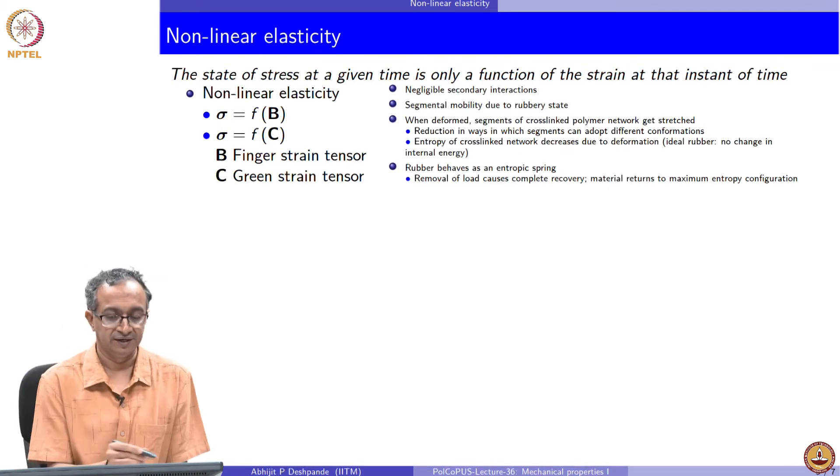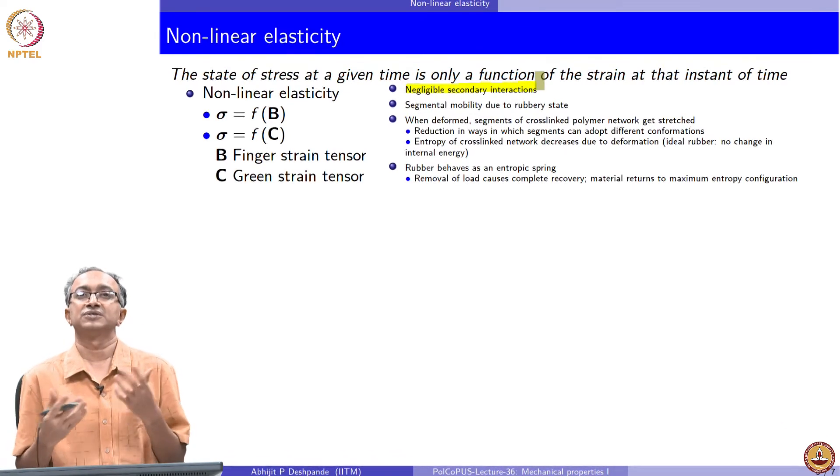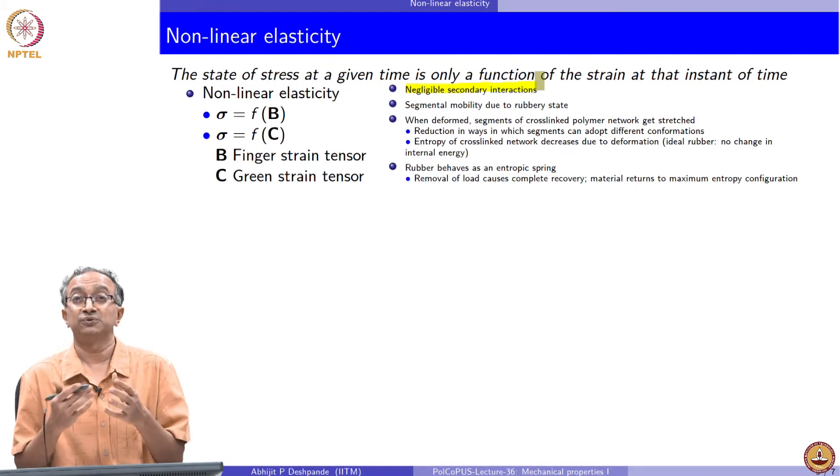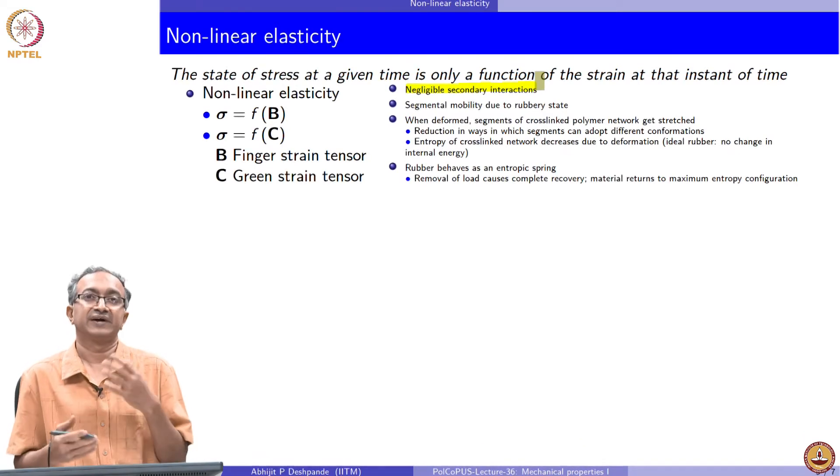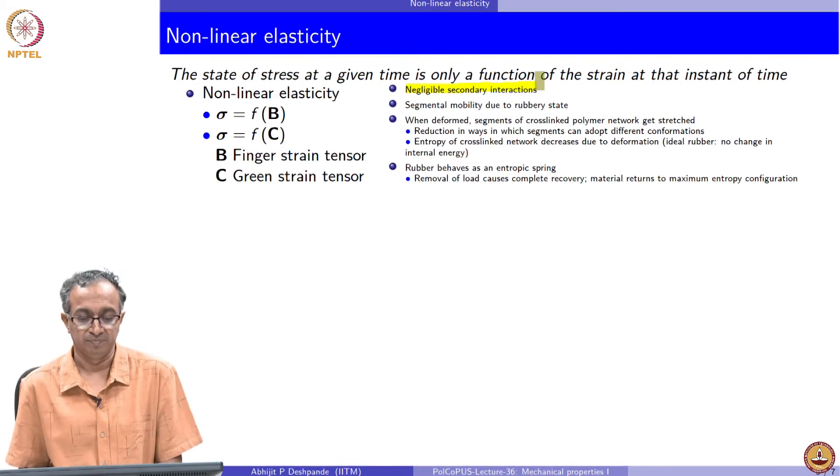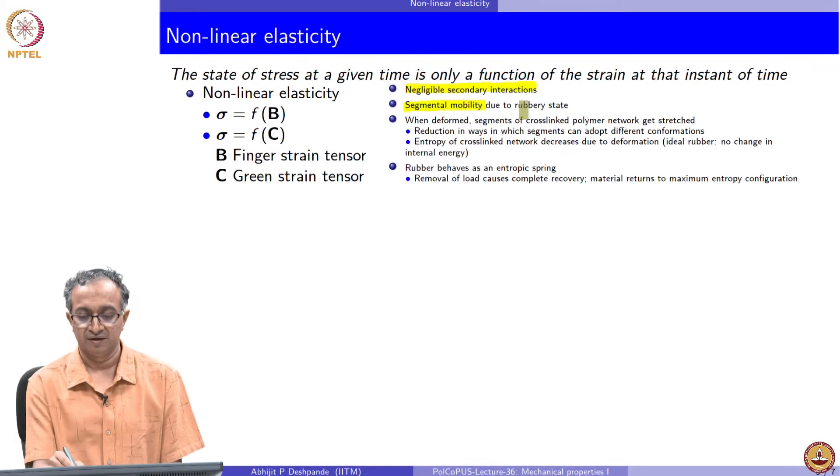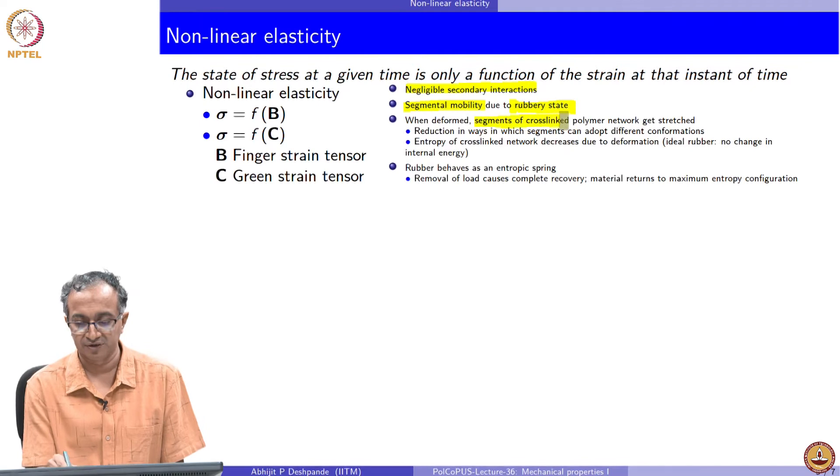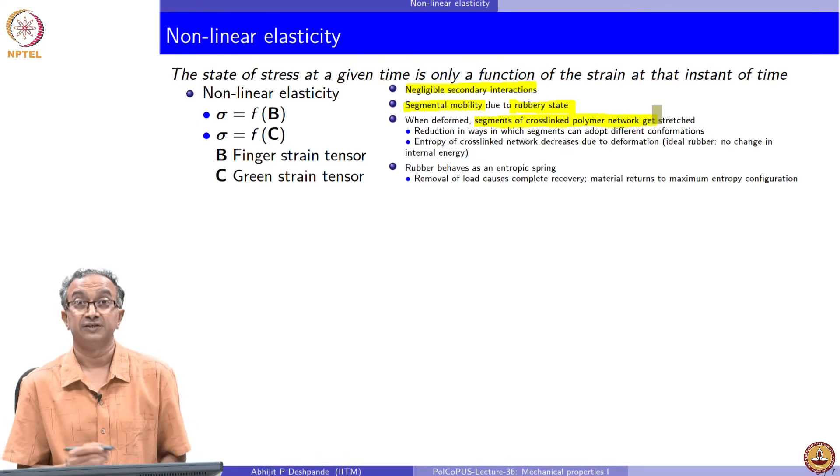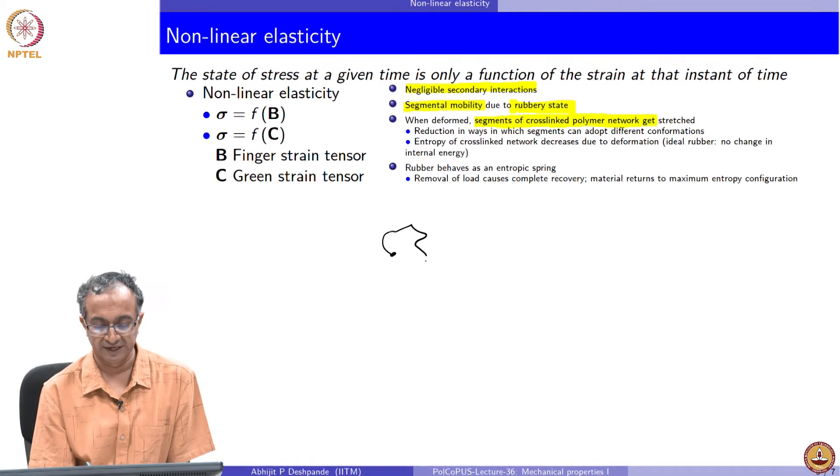In this case, the idea for rubber-like materials is that there are negligible secondary interactions. The macromolecules are not interacting with each other, the only bonded interactions which lead to the stretching and flexibility of macromolecule are relevant. However, a coarse-grained picture in terms of ideal chain or an expanded chain is sufficient for us to look at the elasticity of the macromolecular system. Because we are looking at temperatures where segmental mobility is feasible because of the rubbery state, this is crucial in terms of macromolecular stretching. When deformed, segment of the cross-linked polymer network gets stretched and this is possible because of the segmental mobility.